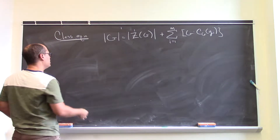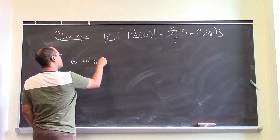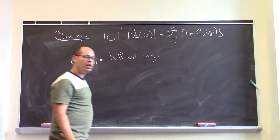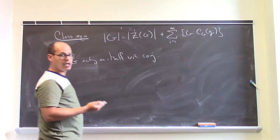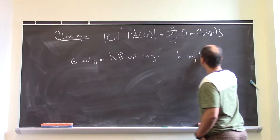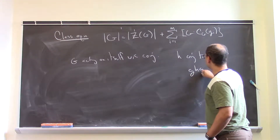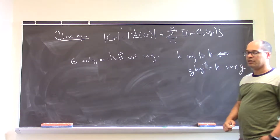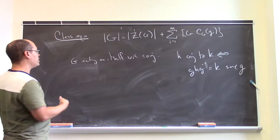Where does this come from? It comes from the fact that we can consider G acting on itself via conjugation. We call the equivalence classes or orbits under this action the conjugacy classes. H is conjugate to K means that gHg⁻¹ = K for some g.